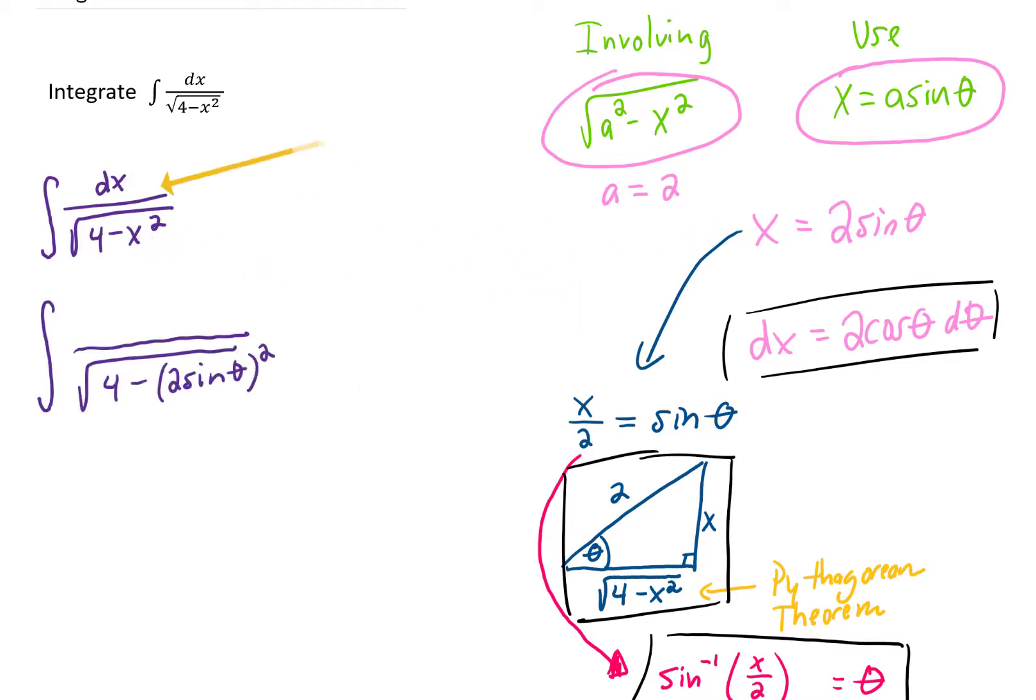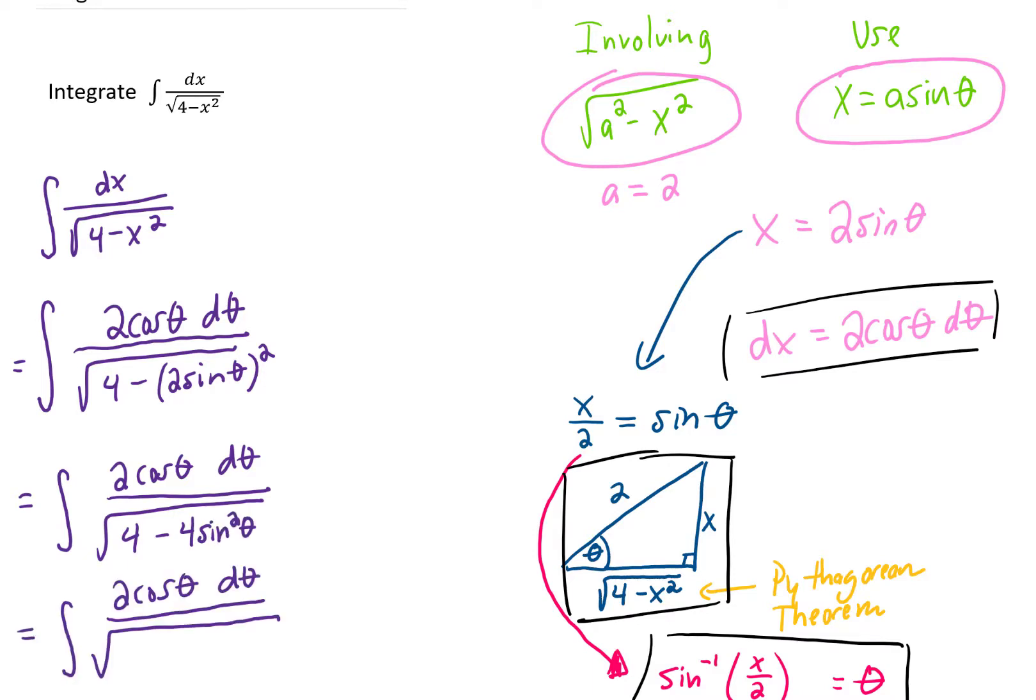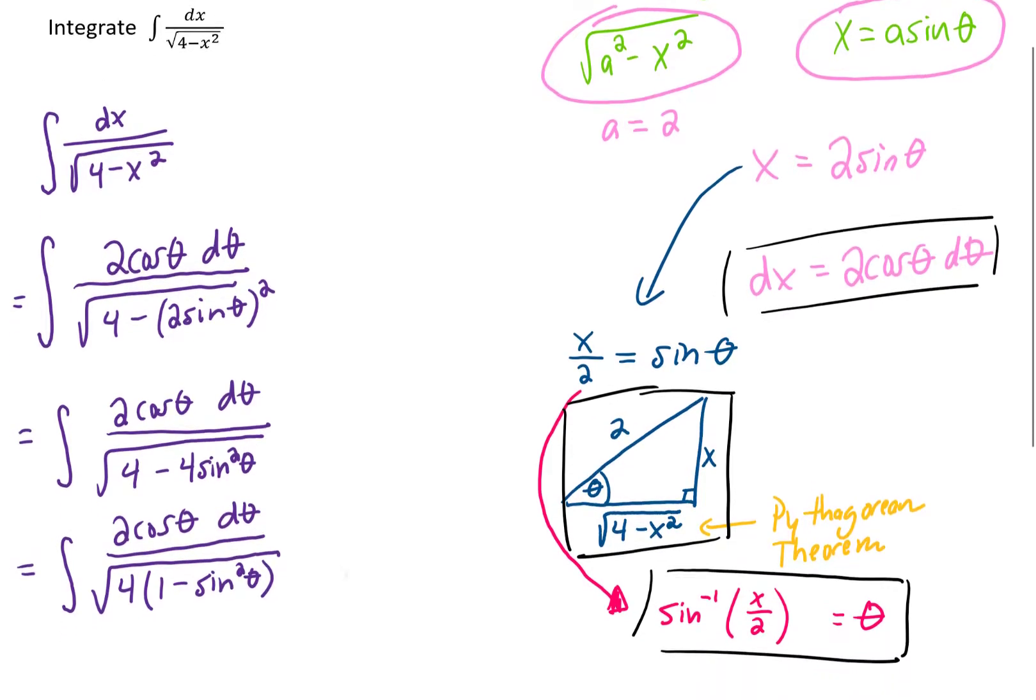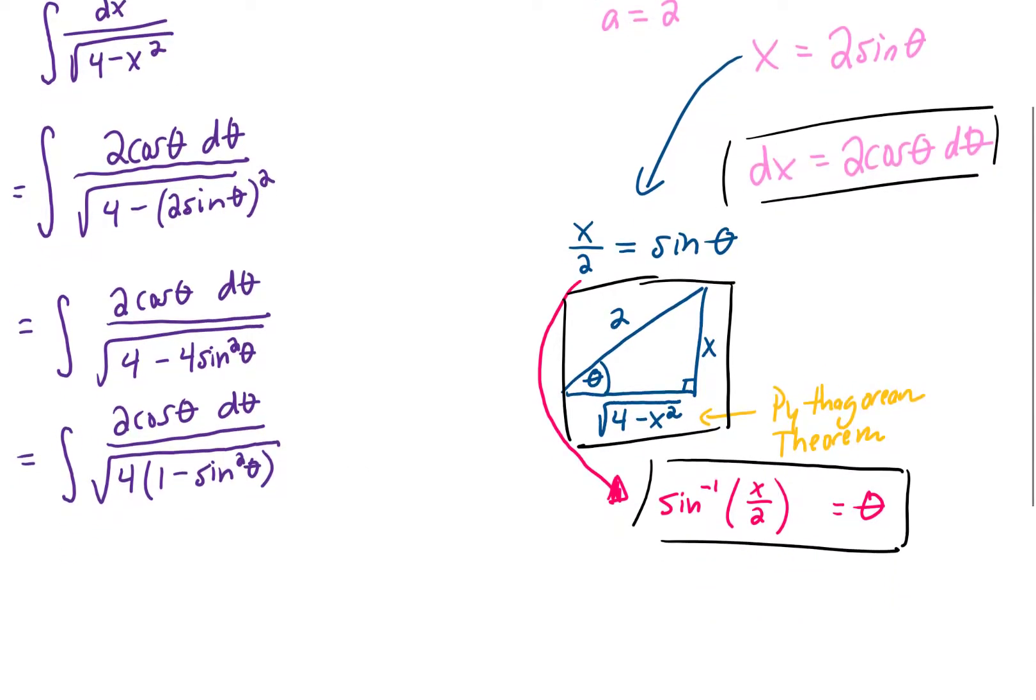Let's plug this substitution x equals 2 sine of theta in right here. And let's plug our dx in right here. Now let's do a little bit of simplification. Squaring 2 sine of theta gives us 4 sine squared theta. Knowing a few things about trig functions suggests that if we pull a 4 out of these two terms in the denominator, we're going to get this 1 minus sine squared term right here.